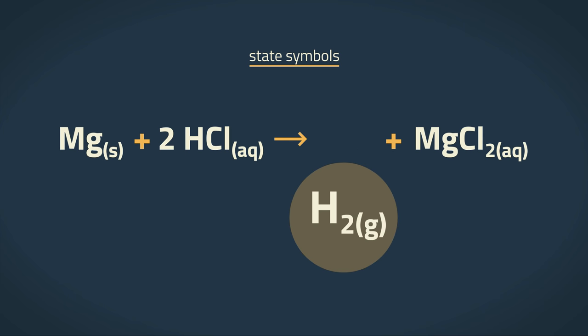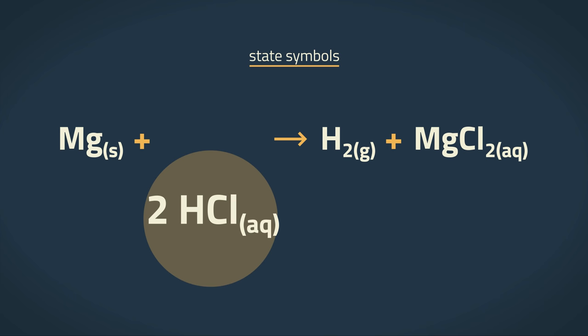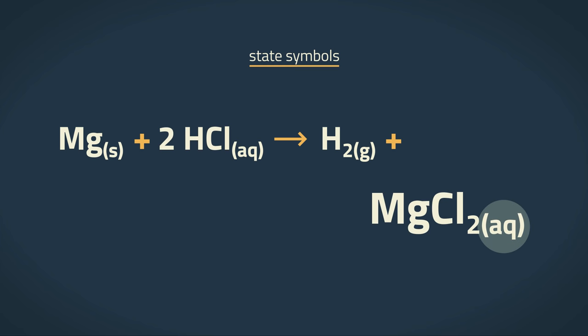Hydrogen gas has a state symbol G because it is a gas. Note that hydrochloric acid is in fact hydrogen chloride dissolved in water, so it has a state symbol AQ, much like dissolved magnesium chloride.